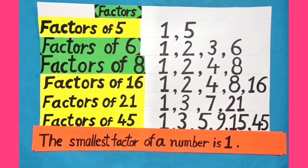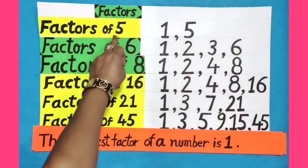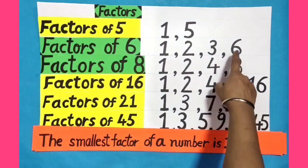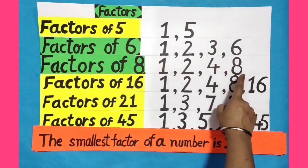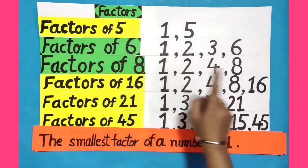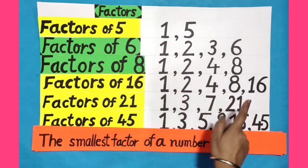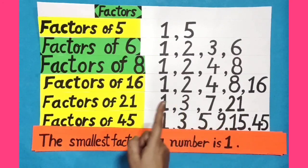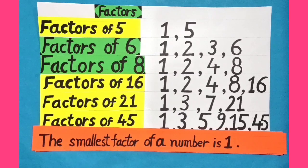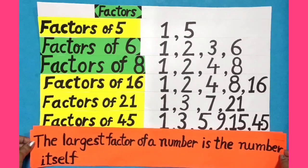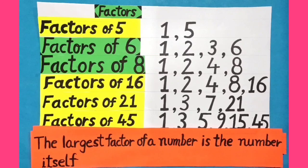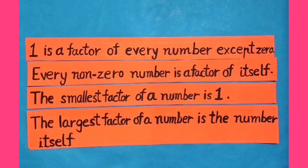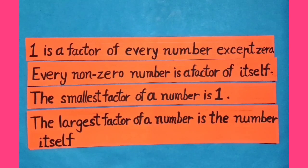Dear students, now we can see that 5 is the largest factor of 5. Similarly, 6 is the largest factor of 6, 8 is the largest factor of 8, 16 is the largest factor of 16, 21 is the largest factor of 21, and 45 is the largest factor of 45. That means the largest factor of a number is the number itself. Dear students, I have told you some interesting facts about factors. I hope you will keep these points in your mind.